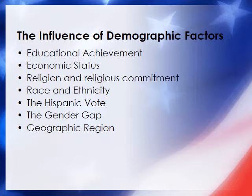Geographic region was not very predictive a generation or two ago — there were Northern Republicans and Southern Democrats. Today, red and blue states are much more defined. If you're running statewide in New York, you're likely a Democrat; if you're running in Mississippi, Alabama, or Georgia, you're likely a Republican. Geography is becoming increasingly important as the country breaks into red and blue states.